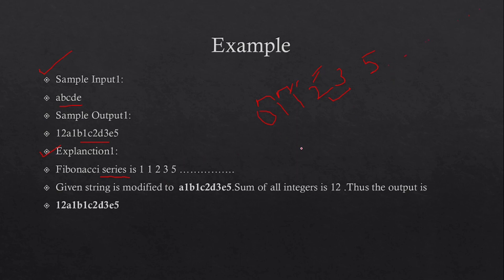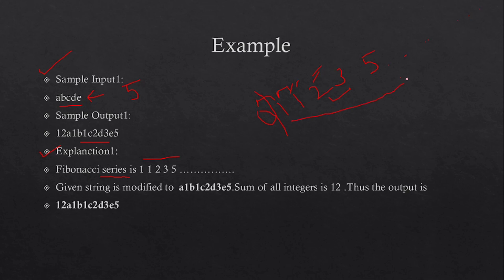Now, how do you figure out for how many numbers you have to calculate your Fibonacci series? To calculate that, you have to take the length of the input string. Here your input string length is five, so it means you have to calculate the first five numbers from the Fibonacci series. Also, you have to ignore zero — you start your calculation from one. You take the first five numbers because your string has five characters.